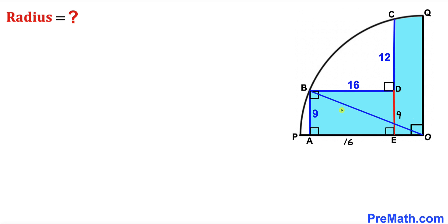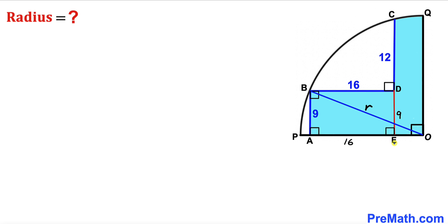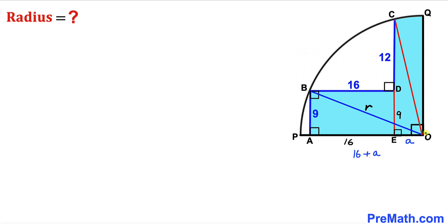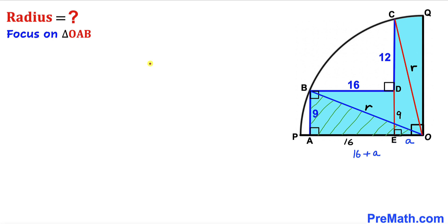In the next step, I have connected center O with point B, and we can see that OB is the radius of the quarter circle. Let me label this radius as lowercase R. We know segment AE is 16, and now let's assume that the small segment EO is 'a'. I have also connected center O with point C, and OC is also the radius R.